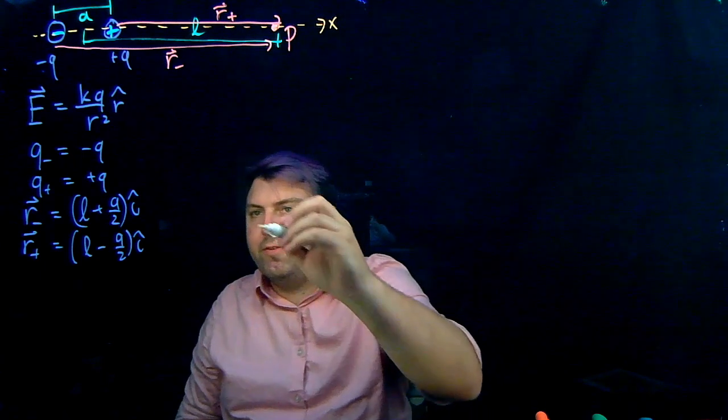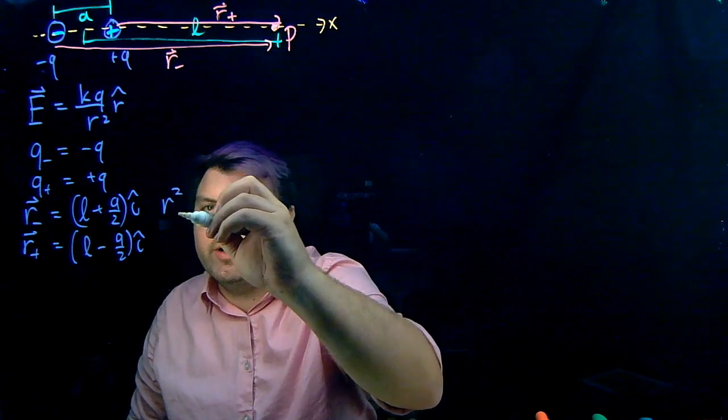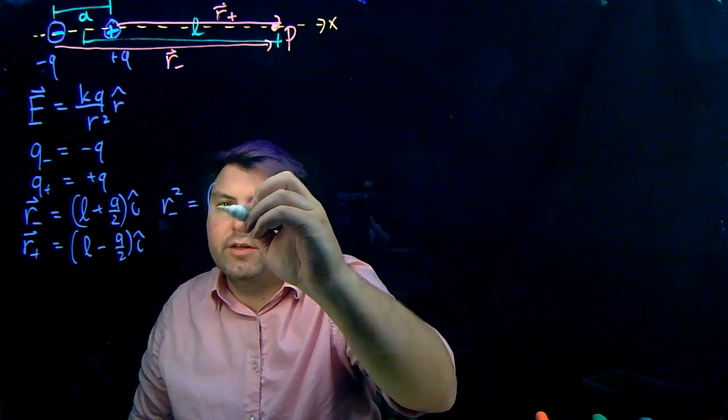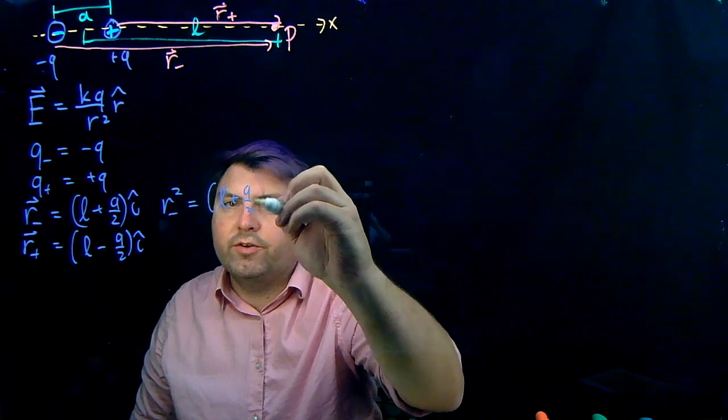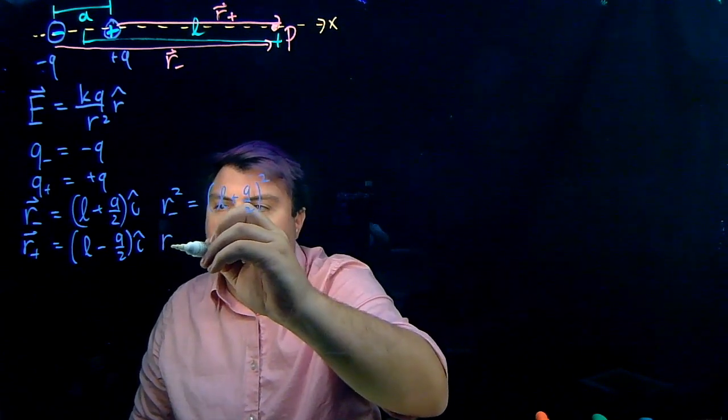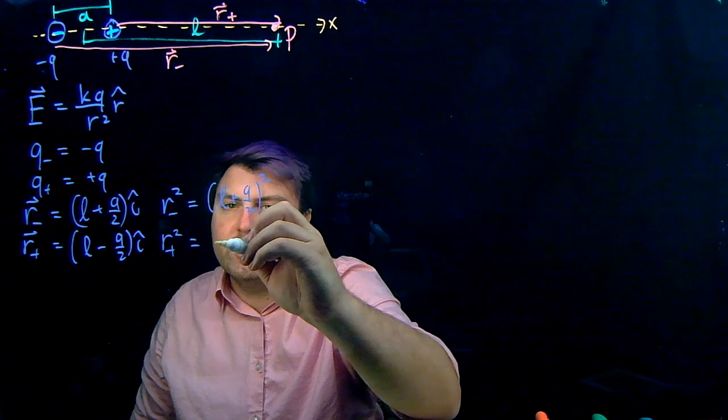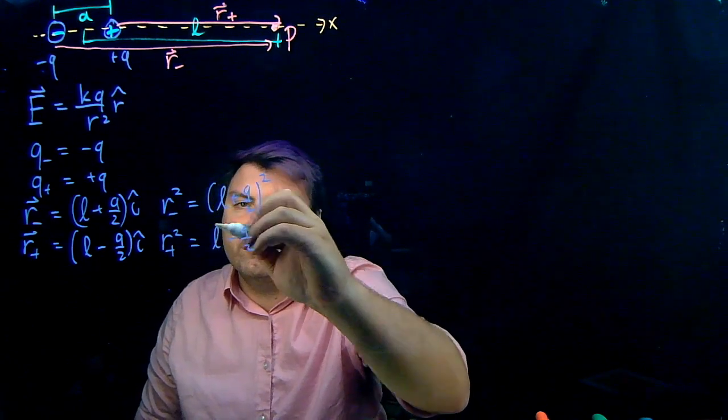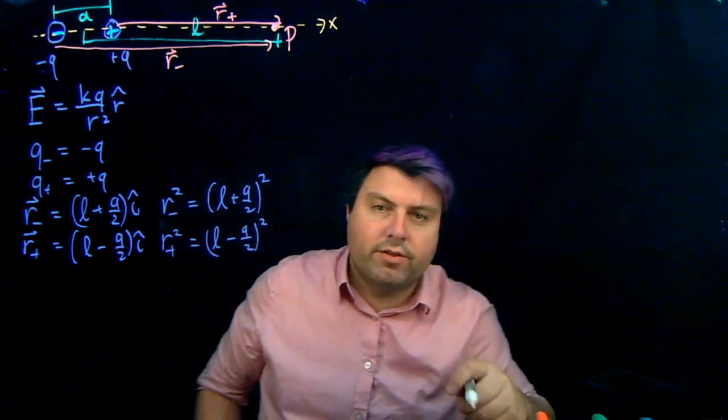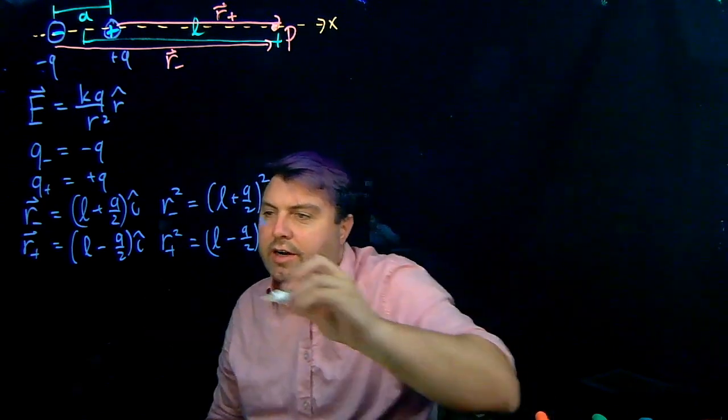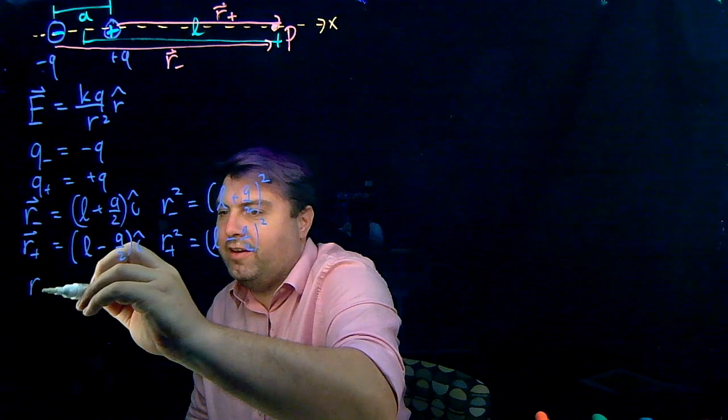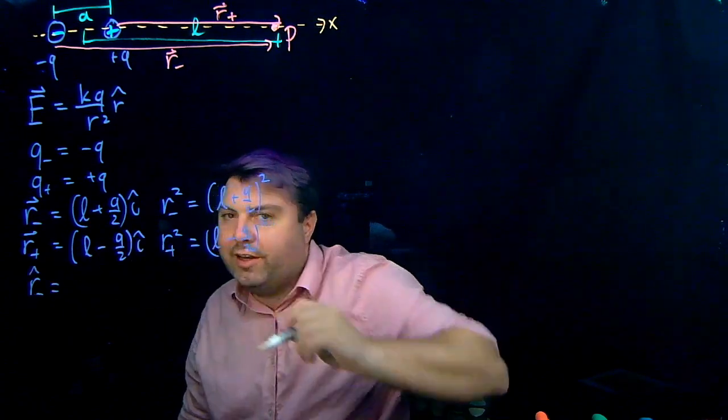So from this, hopefully we feel pretty good about R squared minus is going to be L plus A over 2 quantity squared. R squared plus is going to be L minus A over 2 quantity squared. So nothing too crazy here. R hat is where all of the probably worry is, but there shouldn't be.